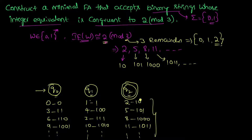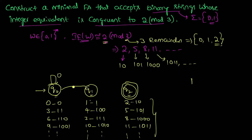All strings with remainder 2 are in our language, so q2 will be our final state. Let's draw all the transitions for each state over zeros and ones. On seeing zero, no matter how many zeros we see, when divided by 3 it leaves remainder 0, so we stay in q0. On seeing 1 at q0, we go to q1 because 1 divided by 3 leaves remainder 1.